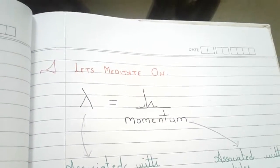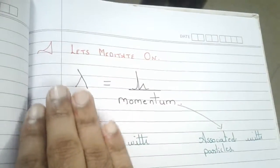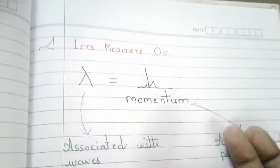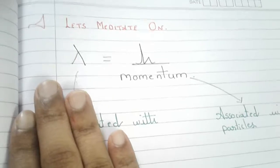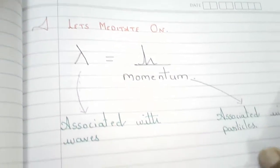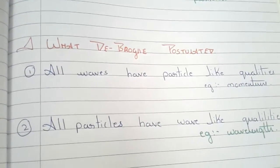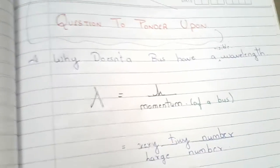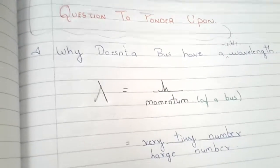The other side was also true: momentum is associated with particles, meaning every particle has a corresponding wavelength. So an electron in motion will have its corresponding wavelength. A tennis ball will have a corresponding wavelength. A bus will have its corresponding wavelength. An elephant which is running will have its corresponding wavelength. Again, this was very counter-intuitive. These were the two postulates of de Broglie's hypothesis: all waves have particle-like qualities like momentum, and all particles have wave-like qualities like wavelength. But a question kept coming to mind: why doesn't a bus have a visible wavelength?